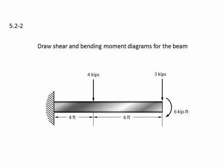Problem 5.2-2. Draw shear and bending moment diagrams for the beam. Here we have a cantilever beam. It is fixed to the wall here. Two point loads applied, and also a point moment applied at the end.